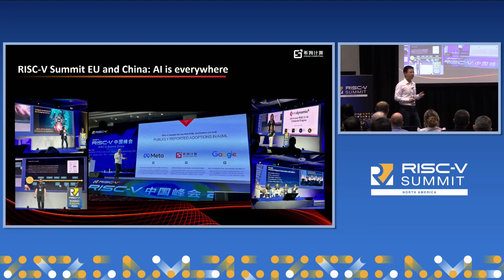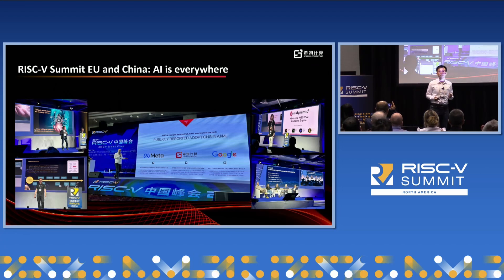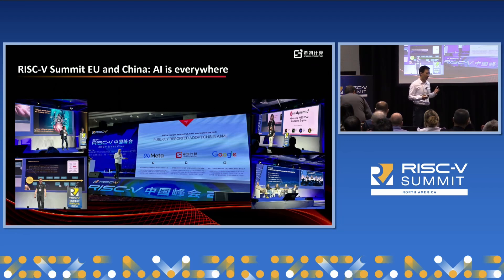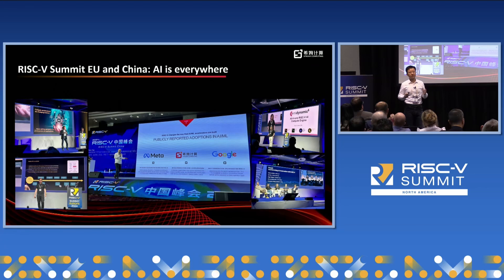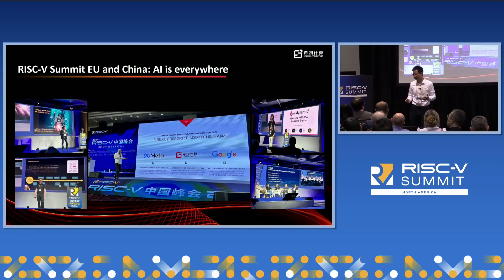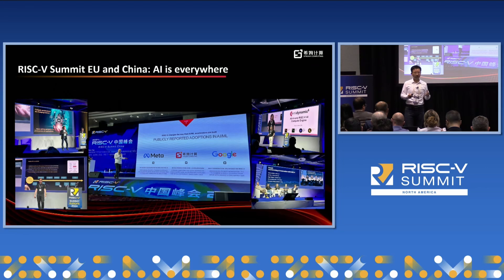As we know, AI and machine learning is one of the most significant computing trends in recent years. RISC-V has become the preferred architecture and standard for designing the industry's most performant and efficient AI machine learning computing resources. We can see more and more options in the AI machine learning hardware markets, from CPU design to SOC platform to AI accelerators. We're not surprised to see that at RISC-V Europe and China, AI is one of the most popular topics.